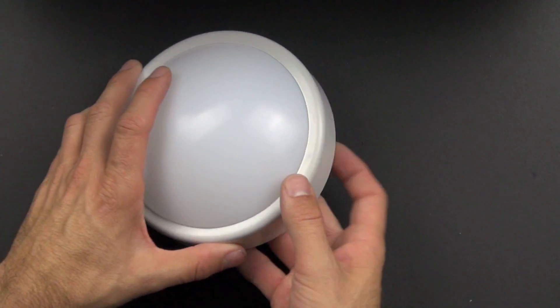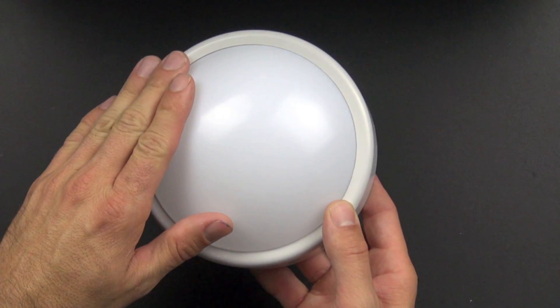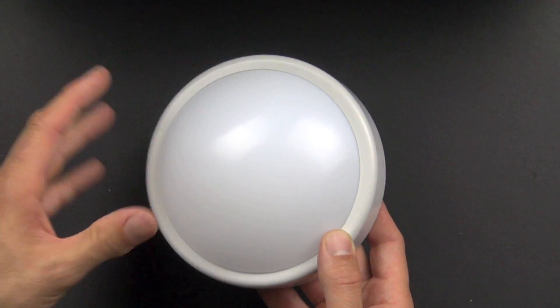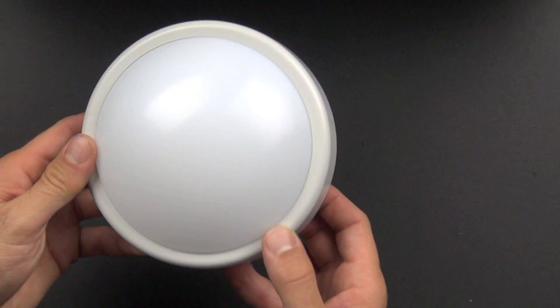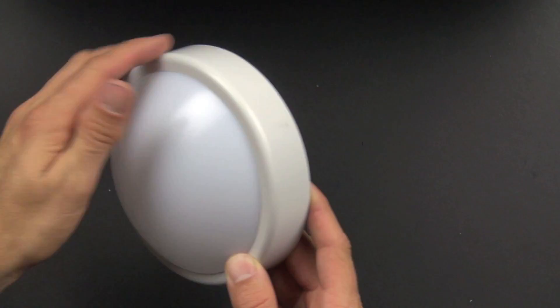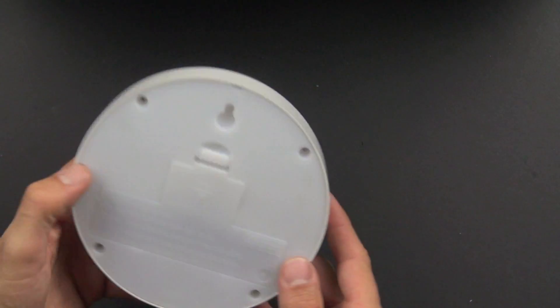So the tap light has what looks like an opaque acrylic dome here that allows the light to spread out in a nice soft glow. And then it has a styrene, this is a polystyrene surround or bezel.